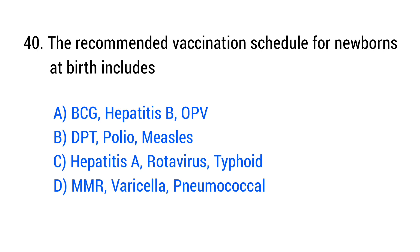Question No. 40. The recommended vaccination schedule for newborns at birth includes? The right answer is Option A: BCG, Hepatitis B, and OPV.